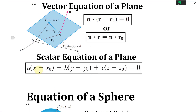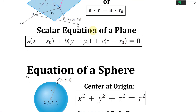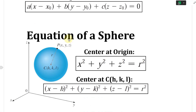The scalar equation is: a times x plus b times y plus c times z, assuming the distance is measured from the origin, and that equals zero.